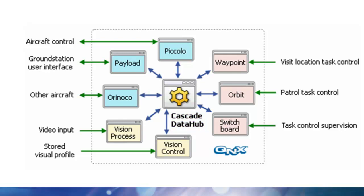One example of this data sharing is between the image processing and task control software. Waypoint and orbit use input from the vision control and vision process. Prior to takeoff, certain algorithms are applied to previously recorded videos. This creates a visual profile of the area, which is maintained by the vision control.